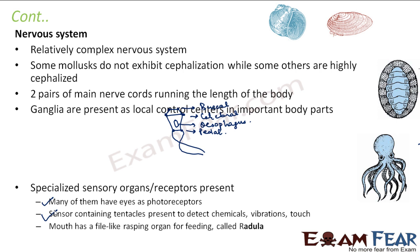The mouth has a file-like rasping organ for feeding, which is called the radula. This is a special organ present only in molluscs, used for feeding. In order to catch its prey, they use this organ — the radula.